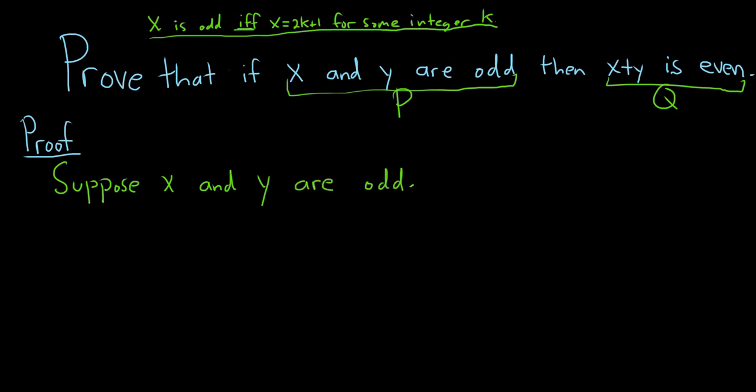Now we have to show that x plus y is even. So I probably should have told you what that meant. x is even if you can write x equals 2k. In other words, if it's a multiple of 2 for some integer k. We don't know what k is, we just know it's some integer. So to show x plus y is even, it's kind of hard to do at this stage in the proof.